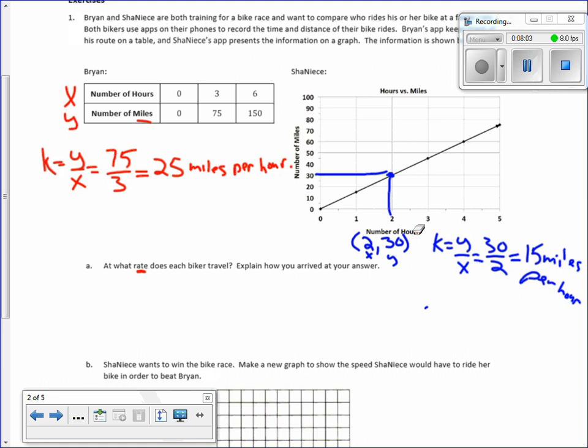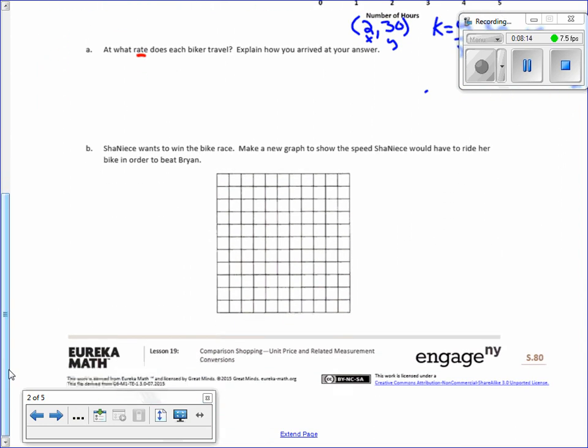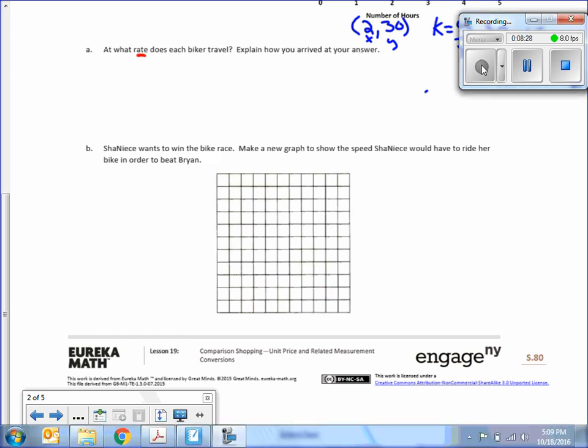Explain how you arrived at your answer. Well, I would say I found the rate by dividing the number of miles by the number of hours. Okay, I'm not going to take the time to write that, but that's what I would have said. Part B, Shanice wants to win the bike race. Make a new graph to show the speed Shanice would have to ride her bike in order to beat Bryan. I've got to pause here, recalibrate, the board is off.